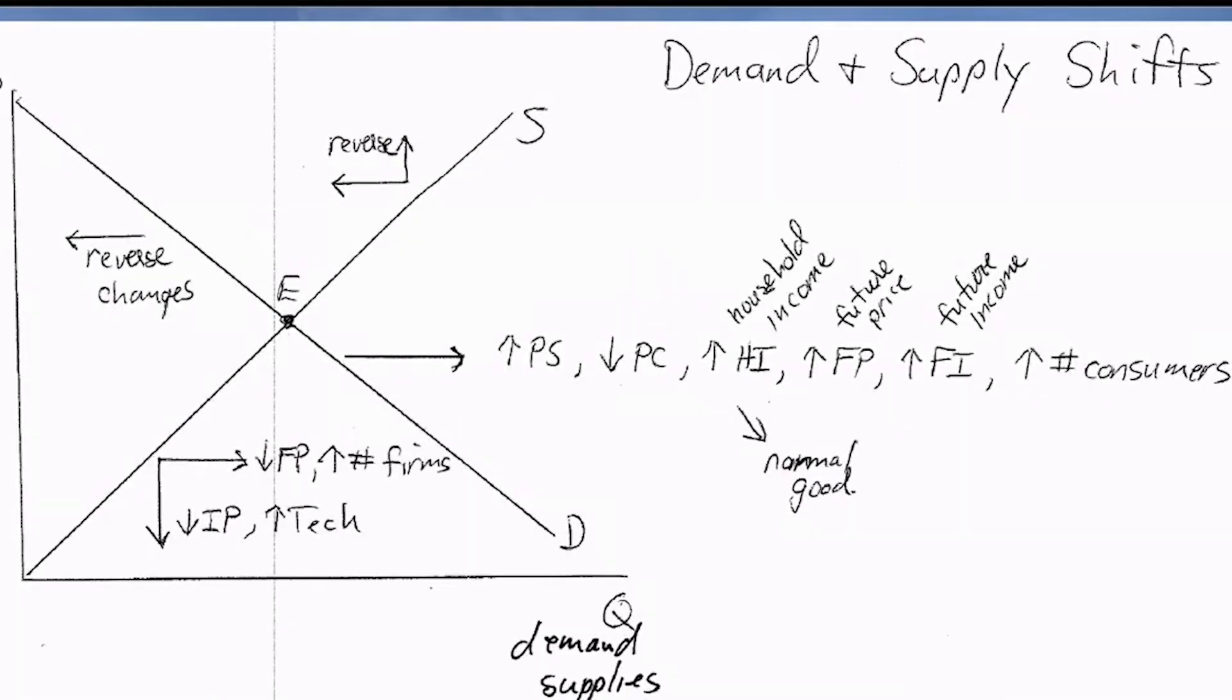Now let me talk first about the supply function over here. Notice I've got this rightward, left downward shifting arrow here referring to the supply function, essentially saying that the supply will shift down because of lower costs of production, because of falling input prices and improving technology. That's caused a downward or rightward shift to the supply function.